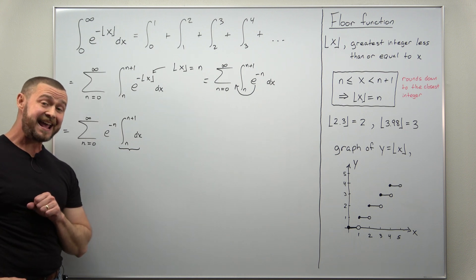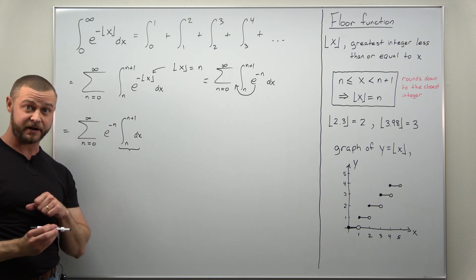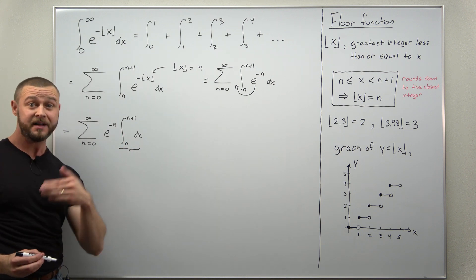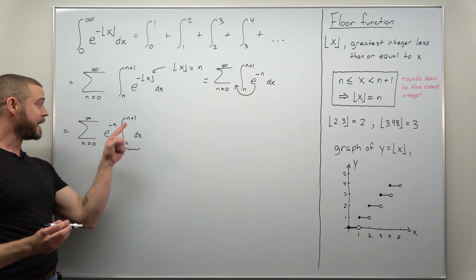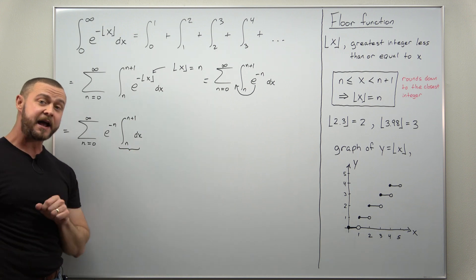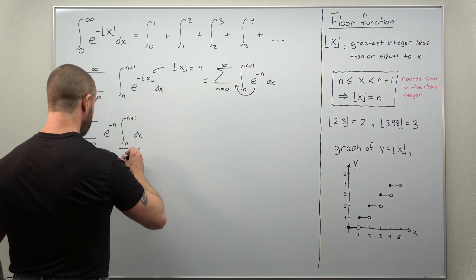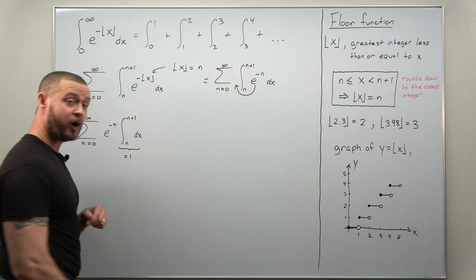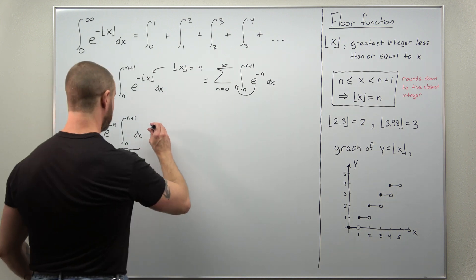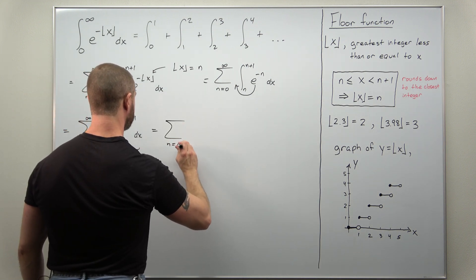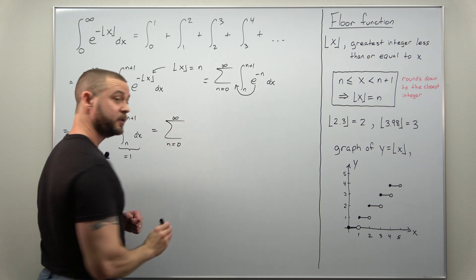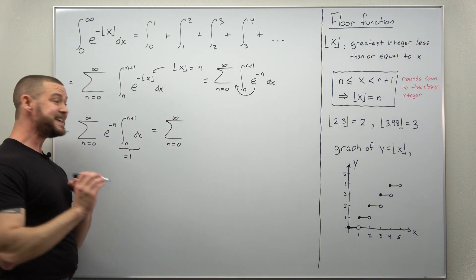You can go ahead and find an antiderivative for the function that you're integrating there which is technically 1. That antiderivative would be x. Go ahead and then evaluate that at n plus 1 and subtract when you evaluate it at n and you'll find this integral comes out to 1. So we get here now the sum from n equals 0 to infinity of just e to the negative n.